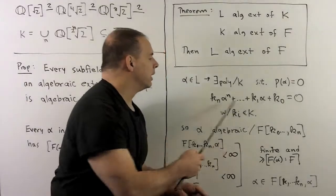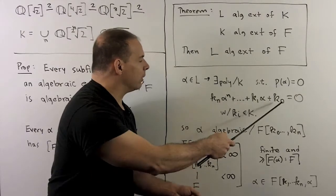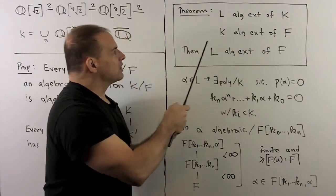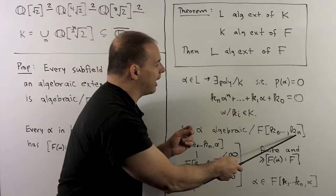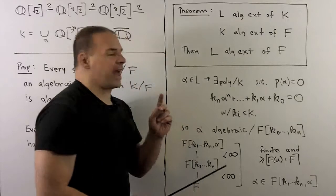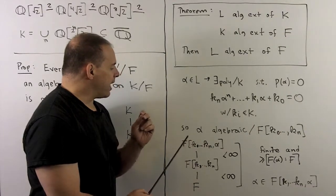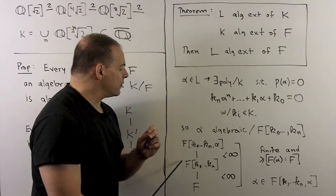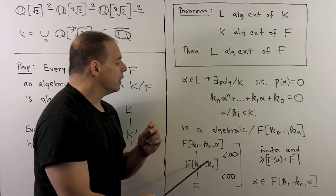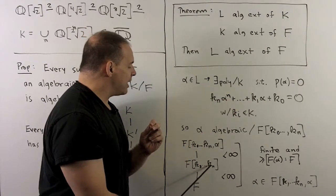Let's write that out. Now, instead of working with all of k, I want to work with the specific coefficients in the polynomial — say k_0 through k_n. Because k is an algebraic extension of f, we have a subfield of k given by f adjoin k_0 through k_n, and I want to work with this instead of k. From the polynomial, alpha is also algebraic over this subfield. So setting up field towers, I have f adjoin k_0 through k_n and alpha sitting over f adjoin k_0 through k_n. By alpha being algebraic, this is a finite extension.